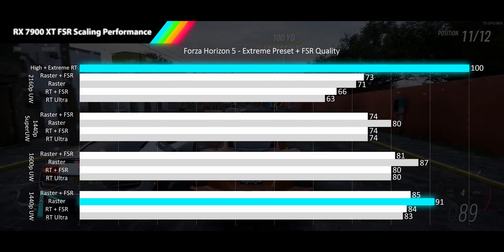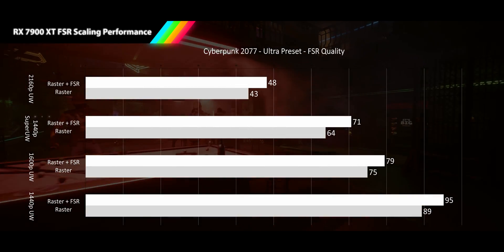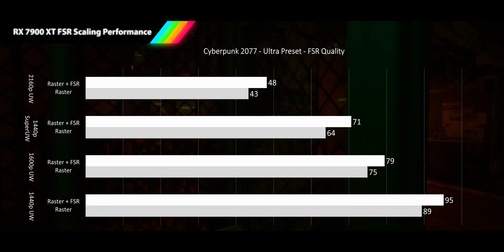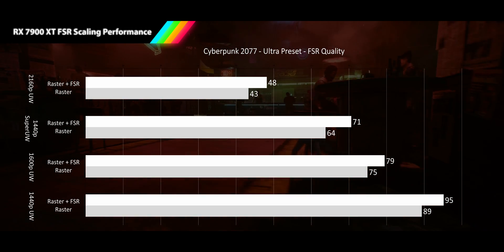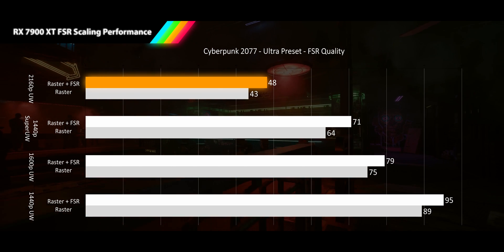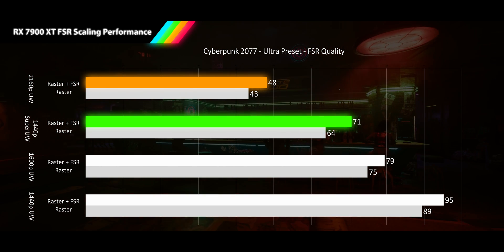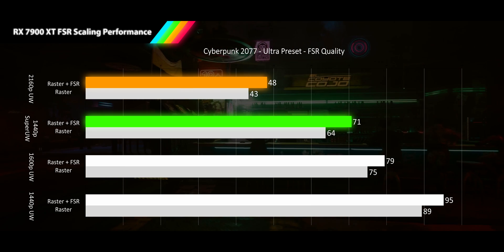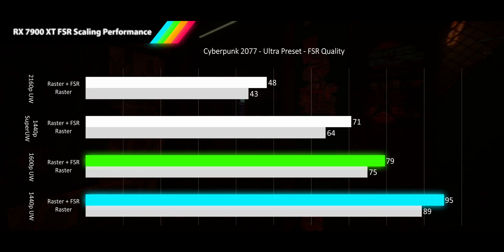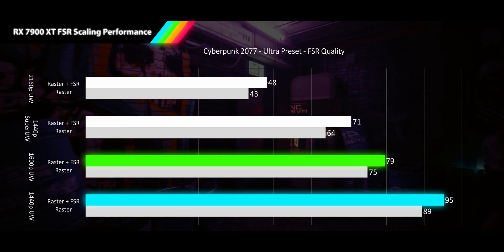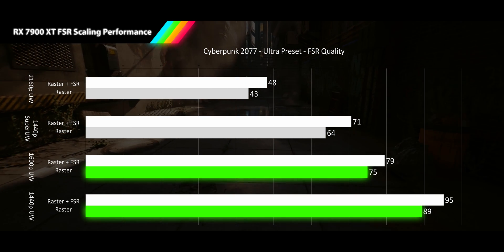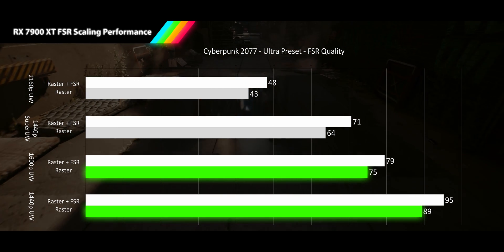The last game in our FSR group is the brutally demanding Cyberpunk 2077. We see gameplay deploying raster rendering techniques that don't scale well with resolution, providing a fairly disappointing 11% improvement at both 4K ultrawide and 1440p super ultrawide. I would still take it in this game, as your frame rate starts low enough that you need all the extra help you can get. 1600p and 1440p ultrawide see even more disappointing performance at 6%, where I think I would keep the extra sharpness of native resolution.